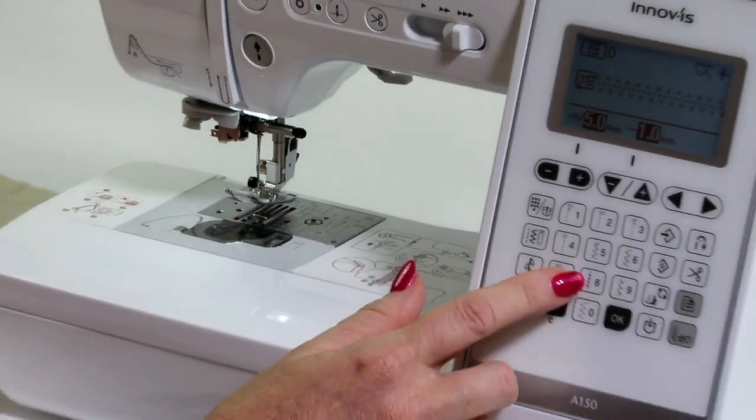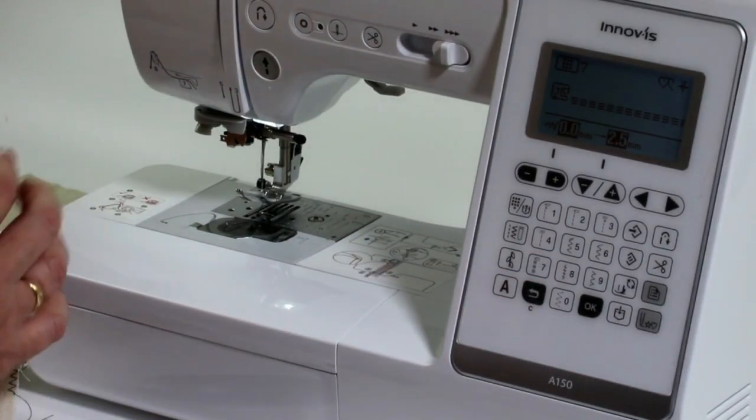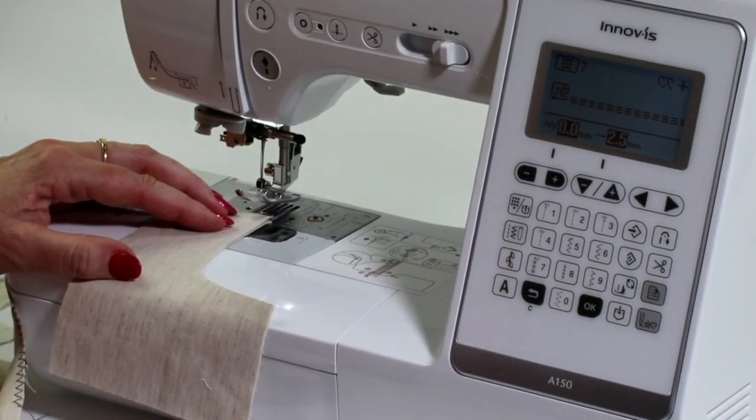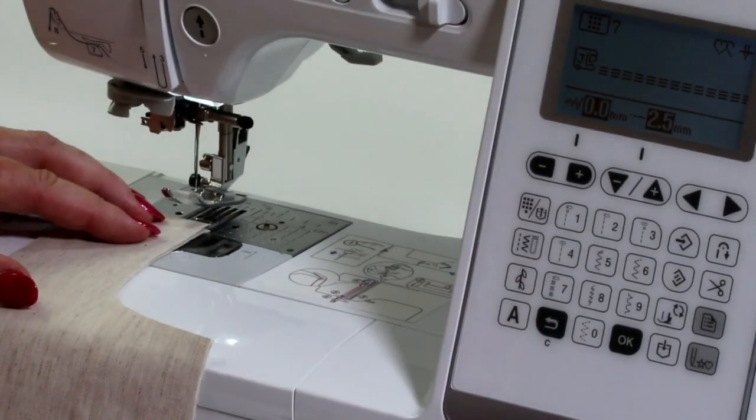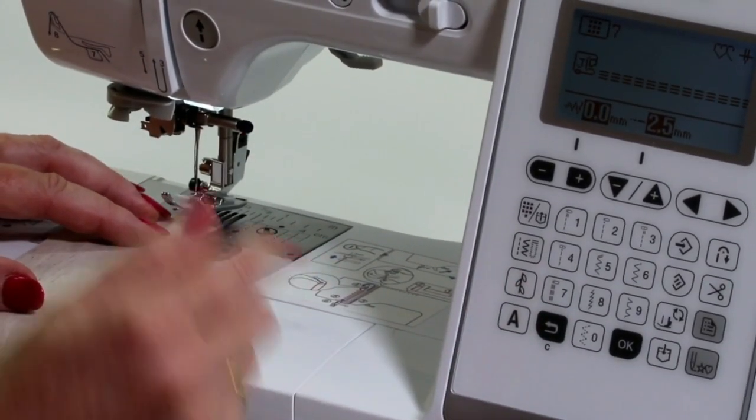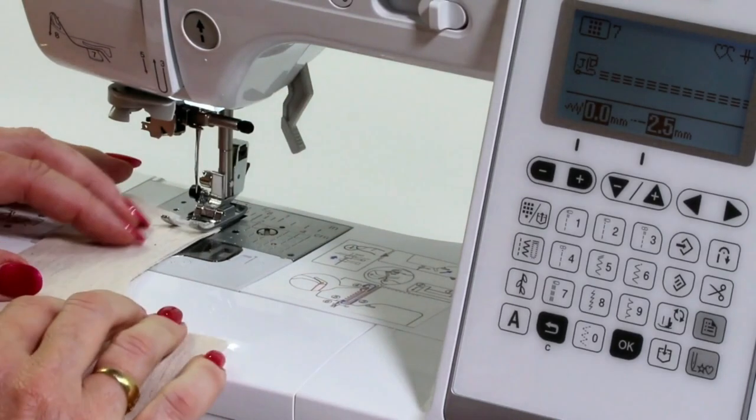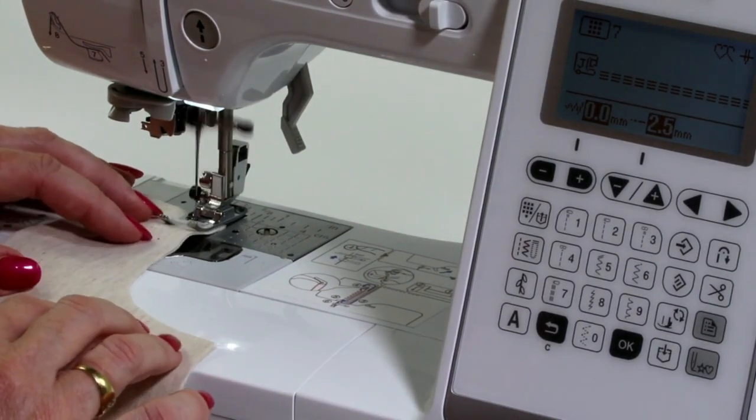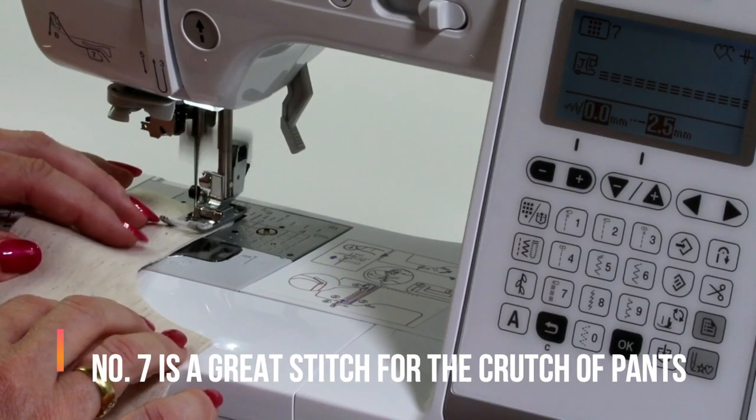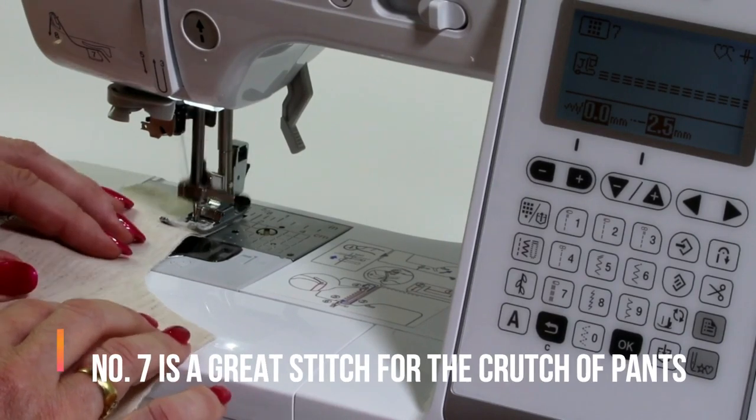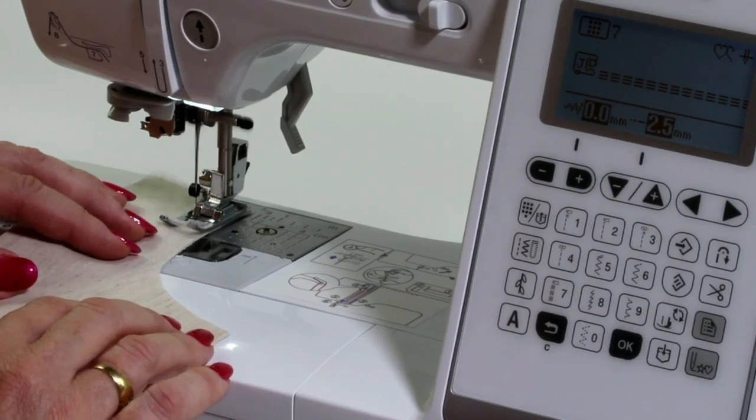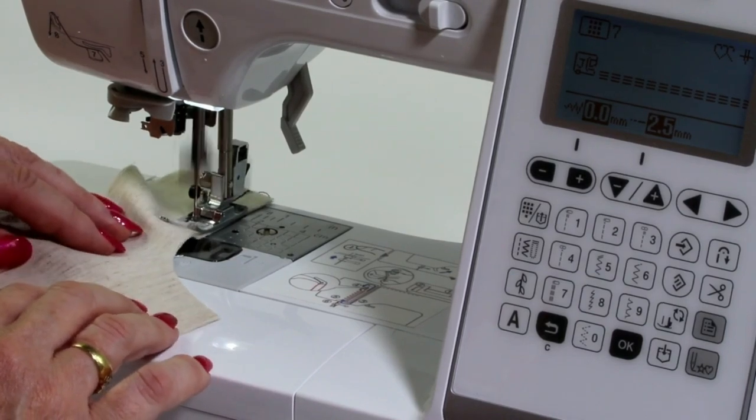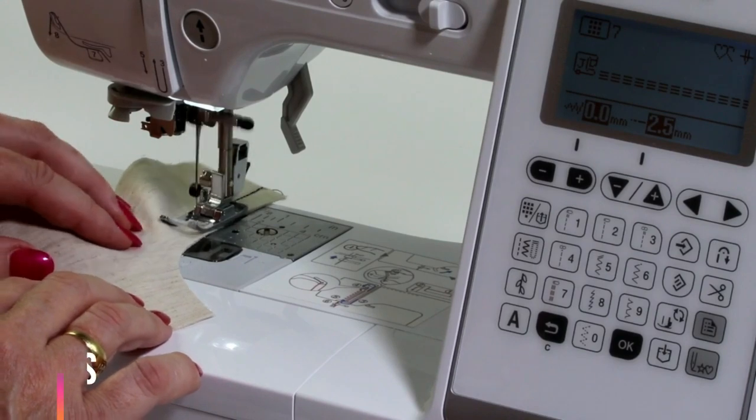Another stitch which I like to use in this standard sewing setting is this one here, which is your three-step, your triple straight stitch here. Now what that does, and I'll show you as it's going around this seam, it actually does a stitch forward, backwards, and then forward again.